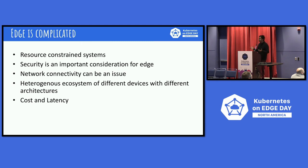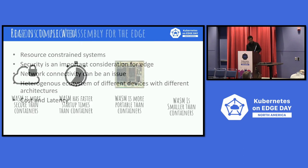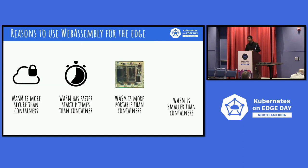Edge is pretty complicated. The biggest issue is the lack of compute. Then of course there's heterogeneous architecture — every different type of device architecture is distinct from your regular types. That means if you're dealing with different device architectures, you'll probably have to maintain different binaries or different scripts to run your workloads on these distinct devices, which can lead to additional costs as well.